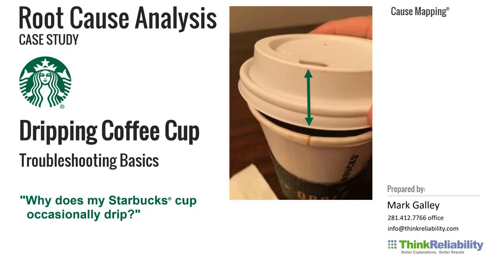This is a case study in how to troubleshoot or investigate a dripping cup of coffee. If you've ever been to Starbucks or a coffee house, occasionally the coffee cup drips. If you look at this picture, there is a seam on the cup right here, and the lid has a hole that you drink from. If the drink hole lines up with the seam, it creates a gap and the coffee cup can leak — dripping on your shirt or desk. This is a simple example of how to troubleshoot a basic issue like this.